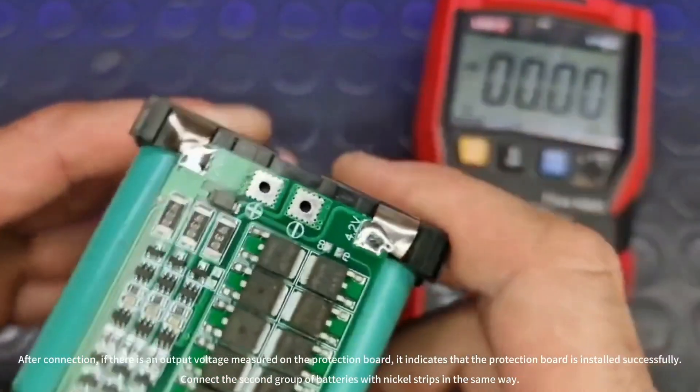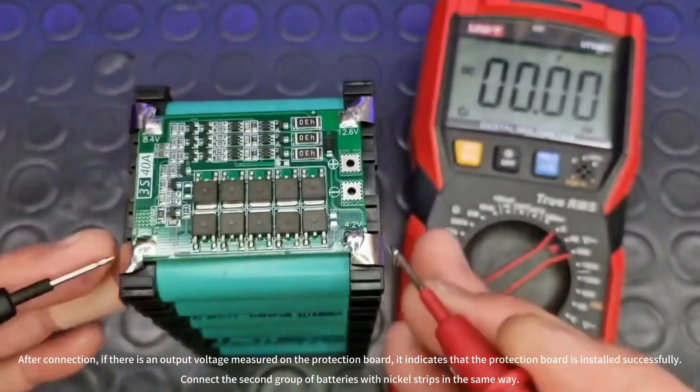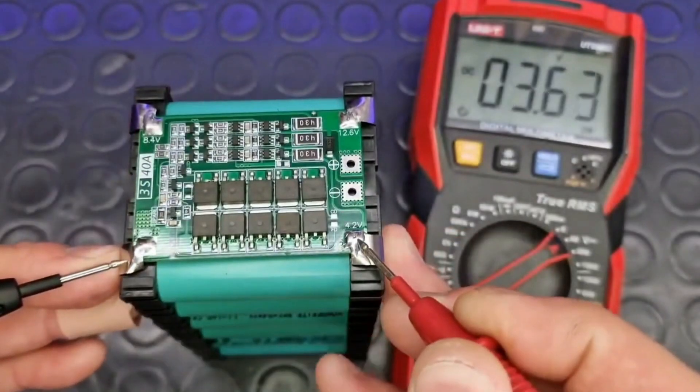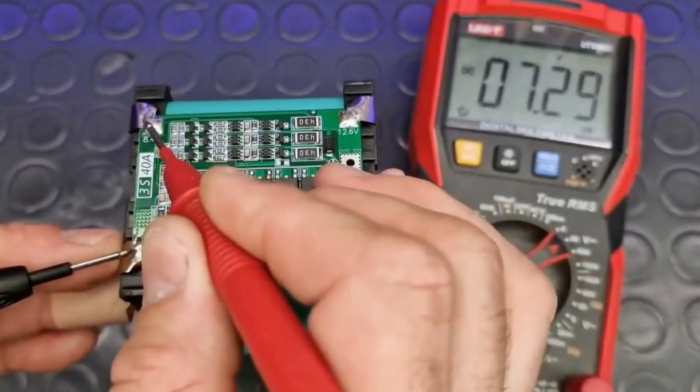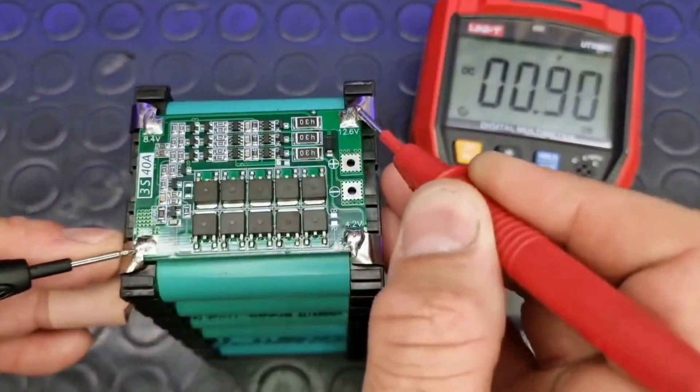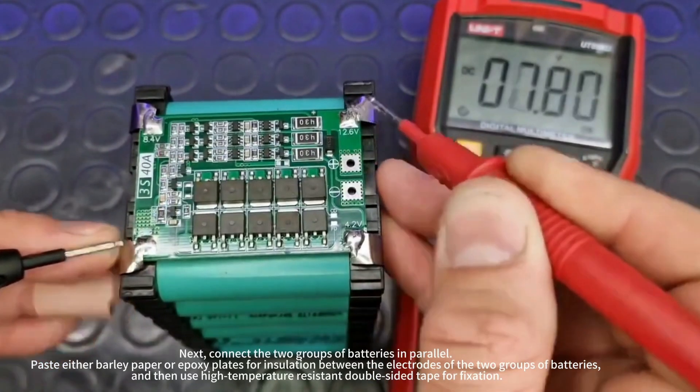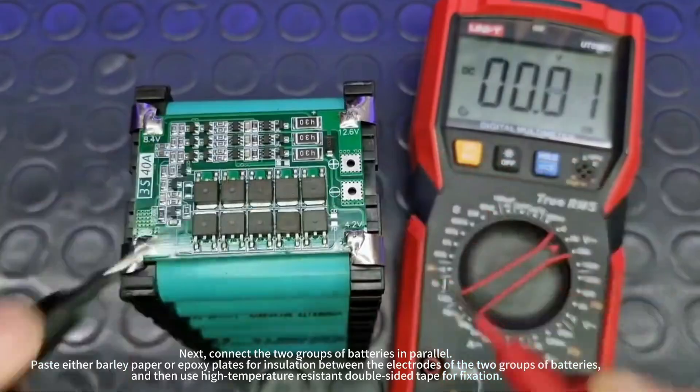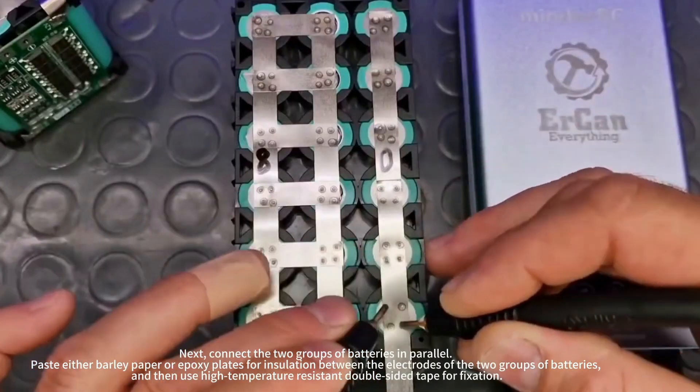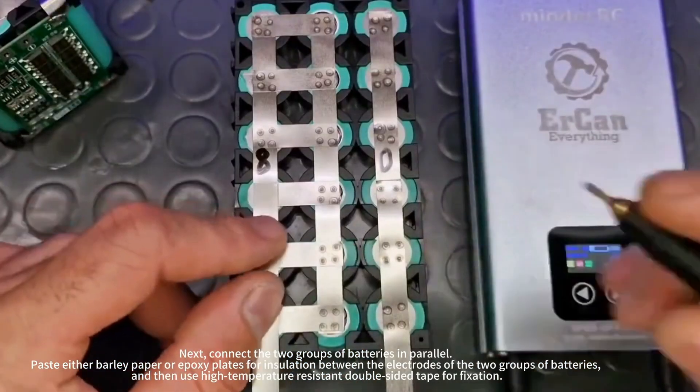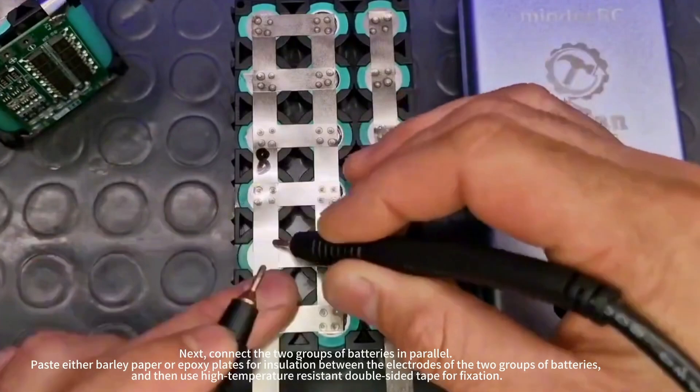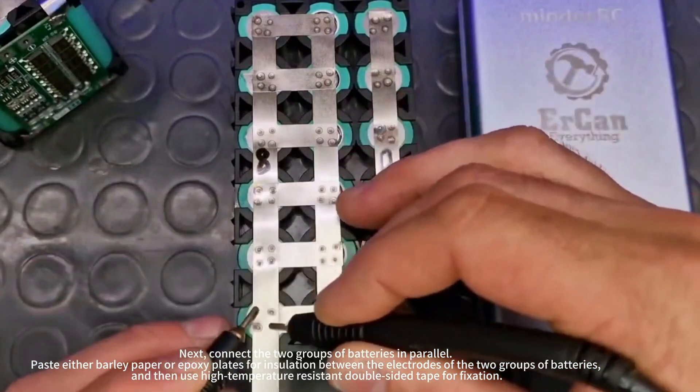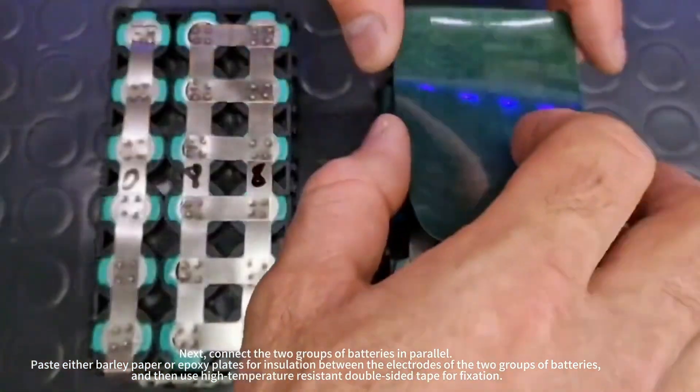Connect the second group of batteries with nickel strips in the same way. Next, connect the two groups of batteries in parallel. Paste either barley paper or epoxy plates for insulation between the electrodes of the two groups of batteries, and then use high-temperature resistant double-sided tape for fixation.